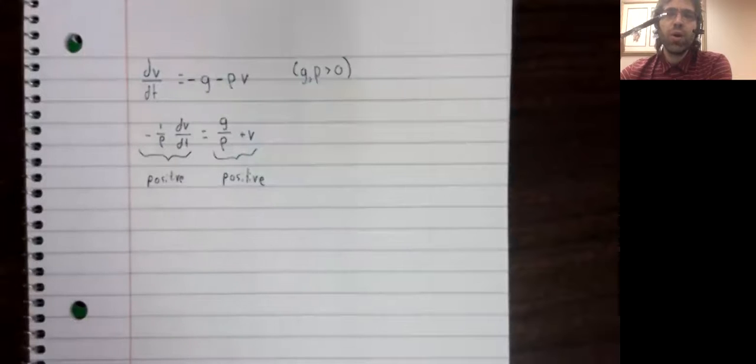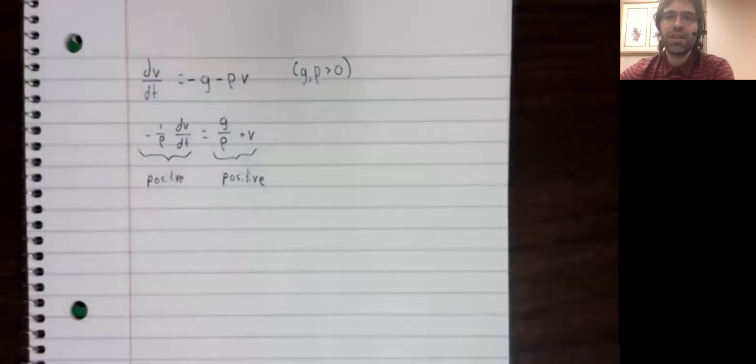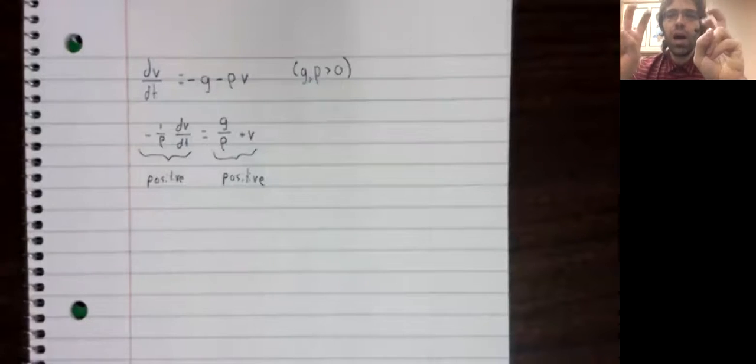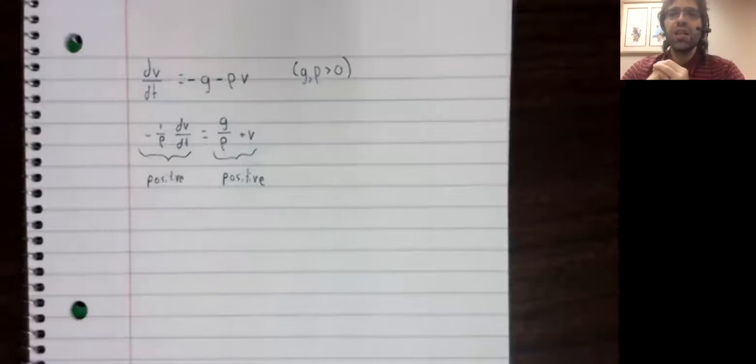As the object falls, it will speed up. But as it falls, its velocity is getting more and more negative. If you will pardon the kind of tortured syntax, what I mean is that the velocity is getting large, but it's getting large in the negative direction.